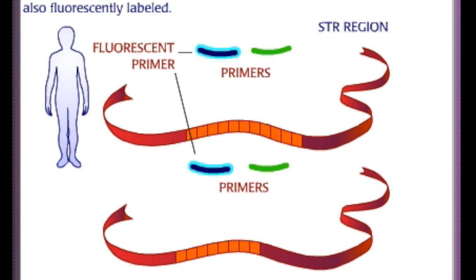This STR difference is detected using a technique called polymerase chain reaction, or PCR, which amplifies specific regions of DNA. PCR primers are designed to bracket the STR. In this type of PCR, one primer of the pair is also fluorescently labeled.